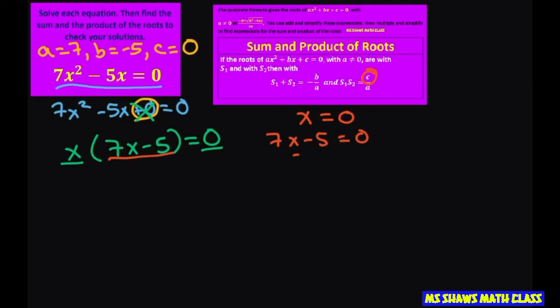Add the 5, divide by 7, so you get x equals 5 divided by 7. So those are your two solutions.